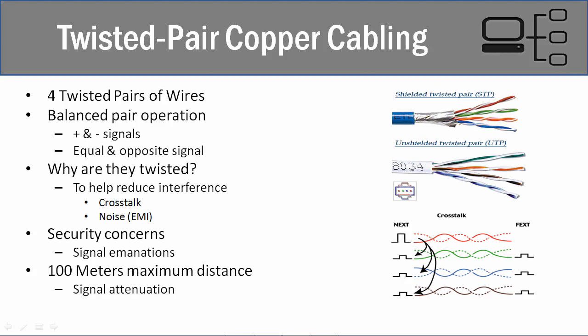In this video, we're going to talk about twisted pair copper cabling in detail. So what is twisted pair networking cabling? It is a cable that contains four different pairs of twisted cabling. You'll notice that we have one, two, three, and four different pairs.